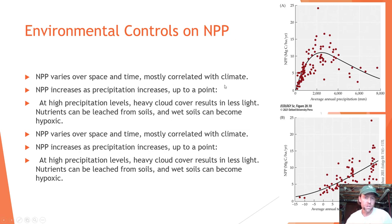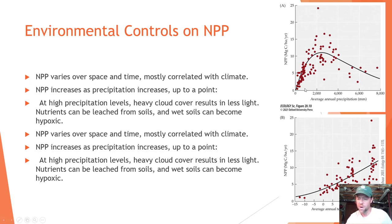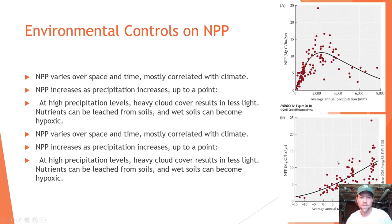NPP varies over space and time, mostly correlated with climate. NPP increases as precipitation increases up to a point — at very high precipitation levels, heavy cloud cover reduces light, nutrients can be leached from soils, and wet soils can become hypoxic. Looking at temperature, there is a steady increase in net primary productivity with increasing temperature, though this would eventually start to decline if temperatures got too high.